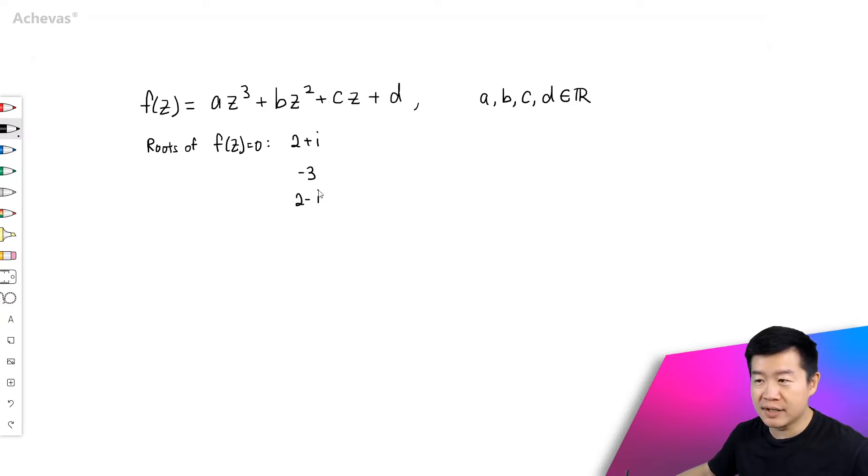By making use of the factor theorem, if 2 plus i is a root, that means z minus (2 plus i) is going to be a factor. This tells me that z minus minus 3 is going to be a factor. And of course, this gives me z minus (2 minus i).